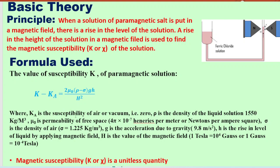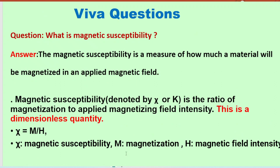In this formula, k_a is the susceptibility of air or vacuum, which is zero. ρ is the density of liquid, σ is the density of air, g is acceleration due to gravity, small h is the change in height of the solution, and capital H is the magnetic field. Using these parameters we can find the value of k. Magnetic susceptibility k or chi is a unitless quantity.